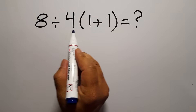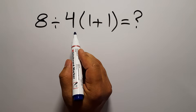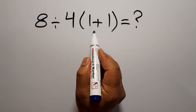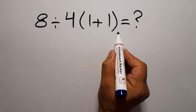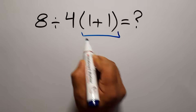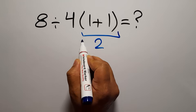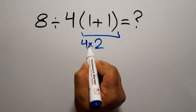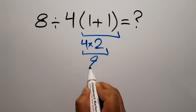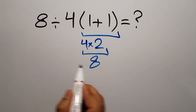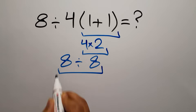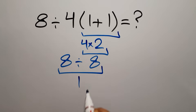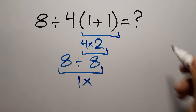8 divided by 4 then times 1 plus 1. Okay, 1 plus 1 gives us 2, so 4 times 2 is just 8. 8 divided by 8 gives us 1. But this answer is not correct.